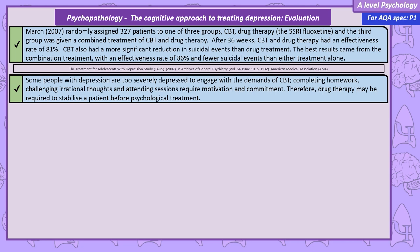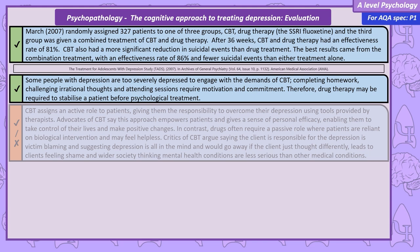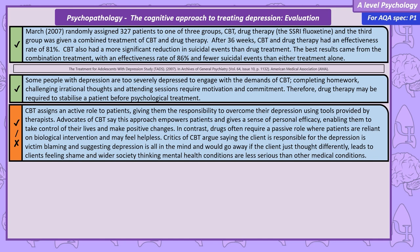The role of the patient in CBT is an active one. The client is given responsibility for the depression, and the therapist provides the tools the client needs to address it. Supporters of CBT argue this gives the client a sense of personal efficacy — a feeling they are in control of directing their own lives and have the power to make positive changes — better than the passive role of drugs where a client is helpless without biological intervention. On the other side of the argument, critics of CBT argue that saying the client is responsible for the depression can be seen as victim blaming, suggesting that depression is all in their mind and would go away if the client just thought differently, which could lead to clients feeling more shame.